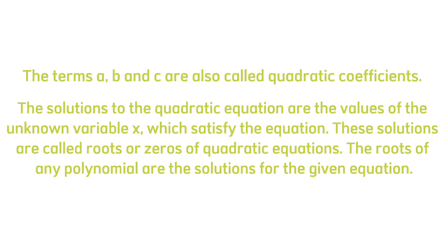The terms a, b, and c are also called quadratic coefficients. The solutions to the quadratic equation are the values of the unknown variable x which satisfy the equation. These solutions are called roots or zeros of quadratic equations. The roots of any polynomial are the solutions for the given equation.